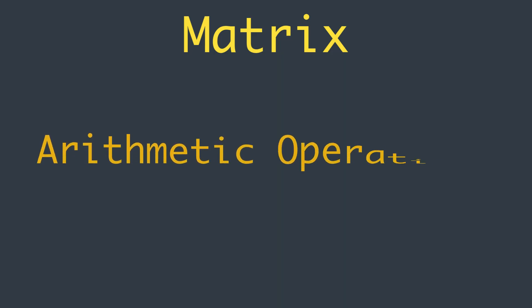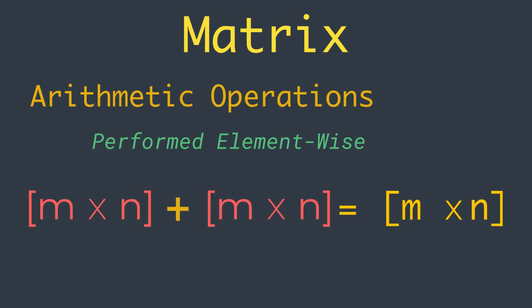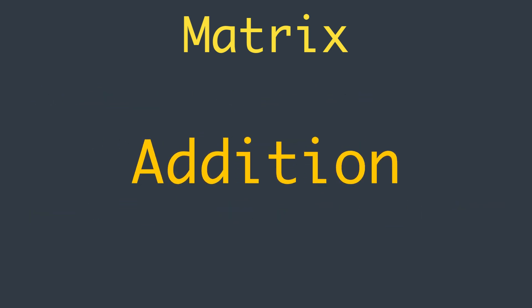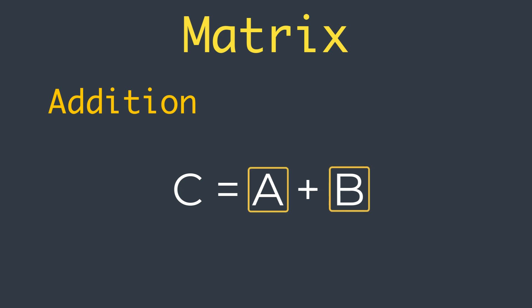Let's talk about the arithmetic operations on matrices. One thing you should keep in mind: all operations performed on matrices will be element-wise between two matrices of equal size, and result in a new matrix with the same size. The first operation is addition. Two matrices with the same dimensions can be added together to create a new third matrix, such as C equal to A plus B. The scalar elements in the resulting matrix are calculated as the addition of the elements in each of the matrices being added.